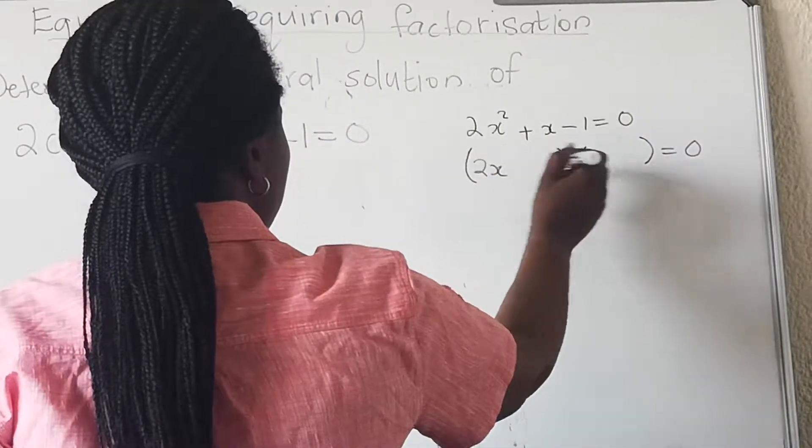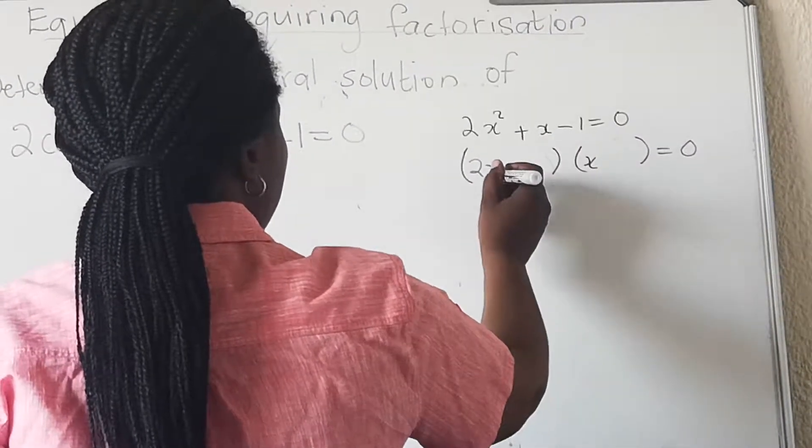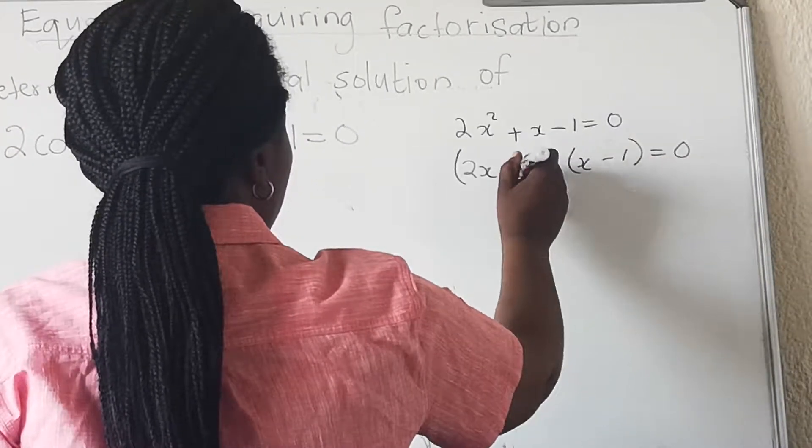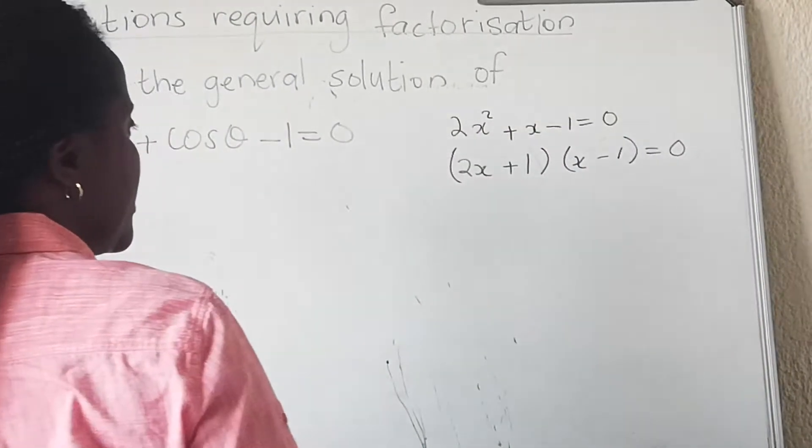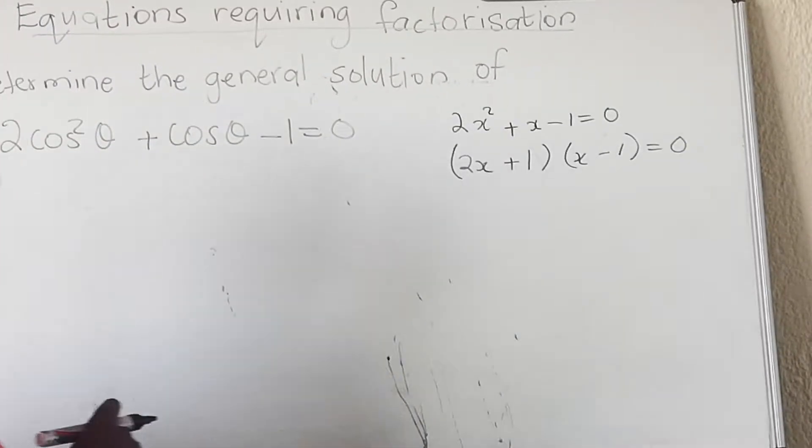You have 2x, you have x, and then x minus one and plus one. Right, now we have factorized it.